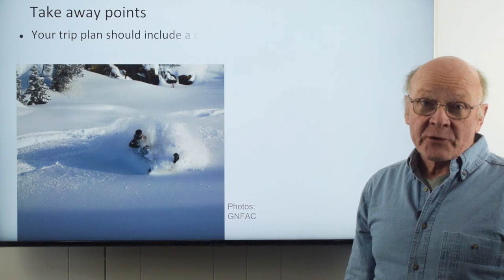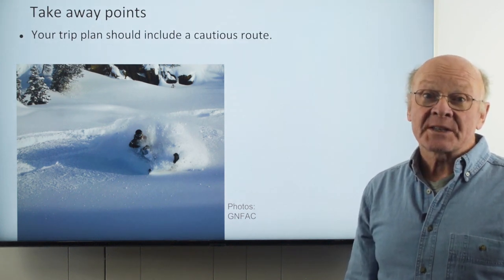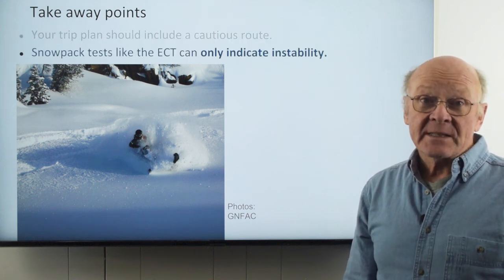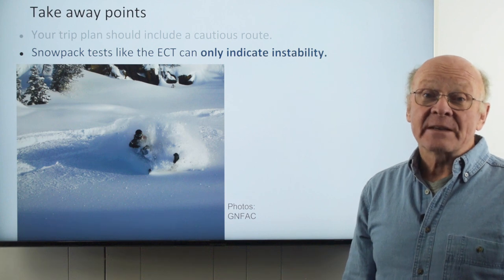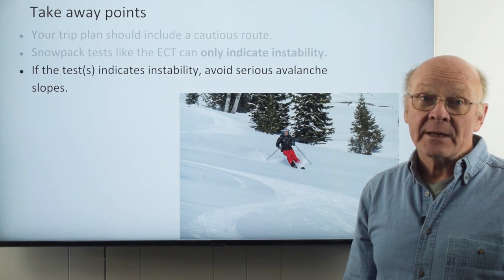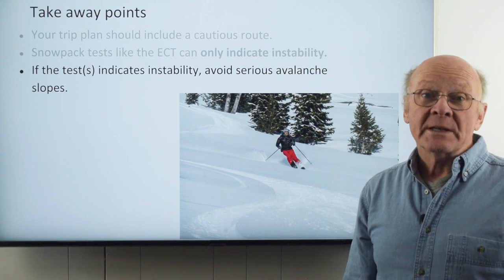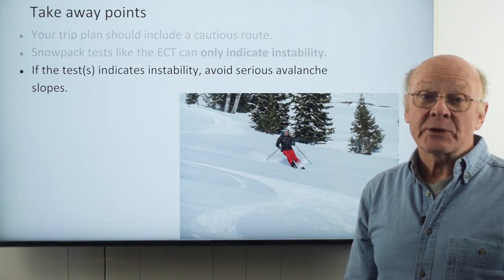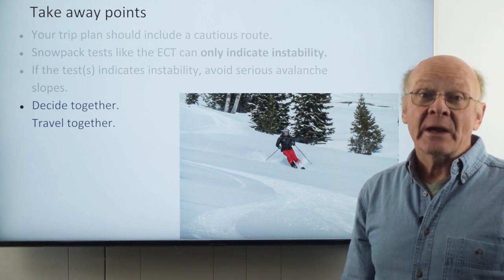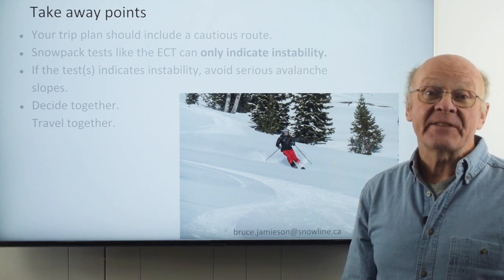Summing up: the trip plan that you make with your group should normally include two routes, one of which cautiously avoids serious avalanche slopes. Recognize that snowpack tests like the extended column test can only indicate instability. If any of your tests indicate instability, then avoid serious avalanche slopes — this may mean turning around or switching to the more cautious route in your trip plan. You've chosen to travel together, so you should decide together at each decision point. We welcome your comments on the ideas in this video.